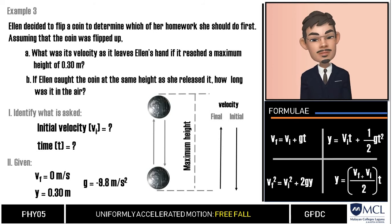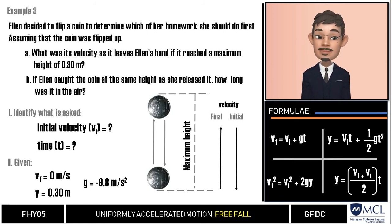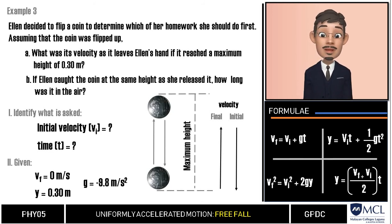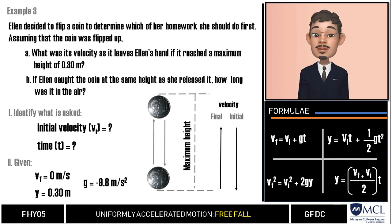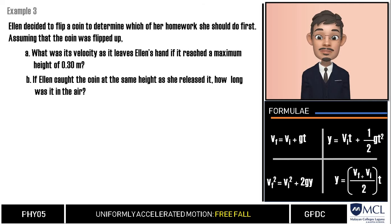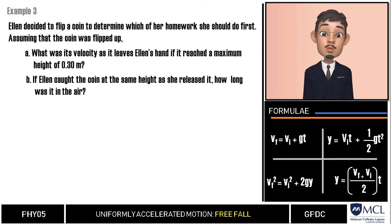In this problem, we use zero as the final velocity as the coin reaches maximum height. Since Ellen catches the coin at the same height she released it, the time for the coin to go up equals the time for it to come back down. With the situation clearly contextualized, let us choose the appropriate formulas to solve the problem.